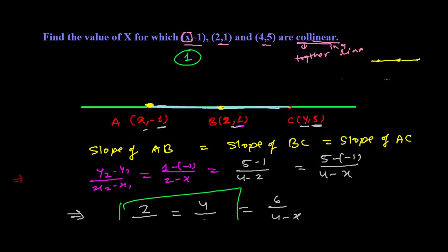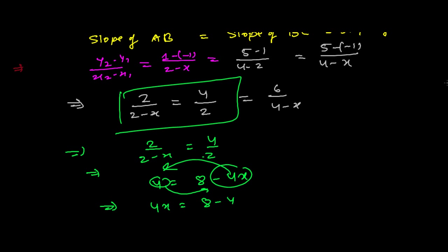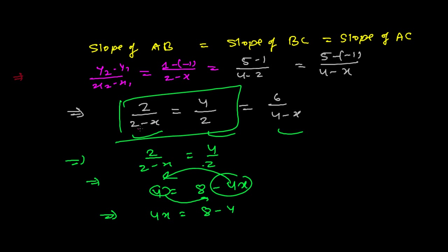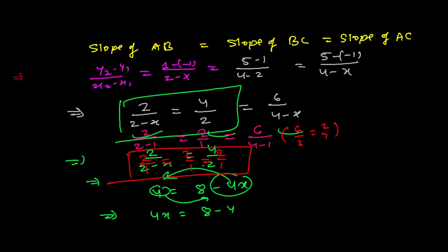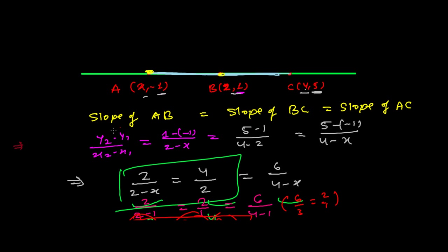We can verify by substituting x = 1. Slope of AB = 2 / (2 - 1) = 2/1 = 2. Slope of BC = 4 / 2 = 2/1 = 2. Slope of AC = 6 / (4 - 1) = 6/3 = 2. All slopes are equal to 2, confirming slope AB = slope BC = slope AC. We are 100% correct. x = 1.